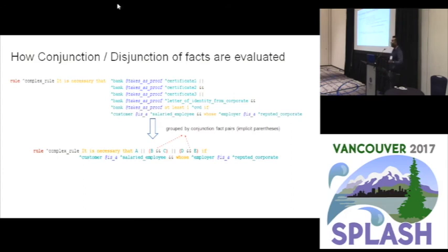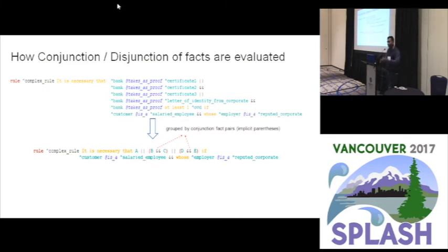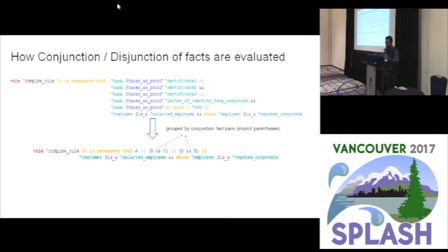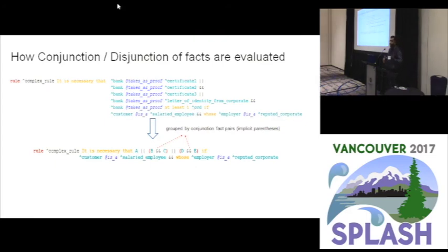This shows the default behavior when you have conjunctions and disjunctions of facts — for example, 'bank takes proof certificate one or certificate two.' The default behavior when no parentheses are used is: we pair up all conjunctions together and then disjunct with the disjunctions. Users can still use parentheses for explicit evaluation order, but this default makes it simpler for domain experts who don't want to deal with parentheses.